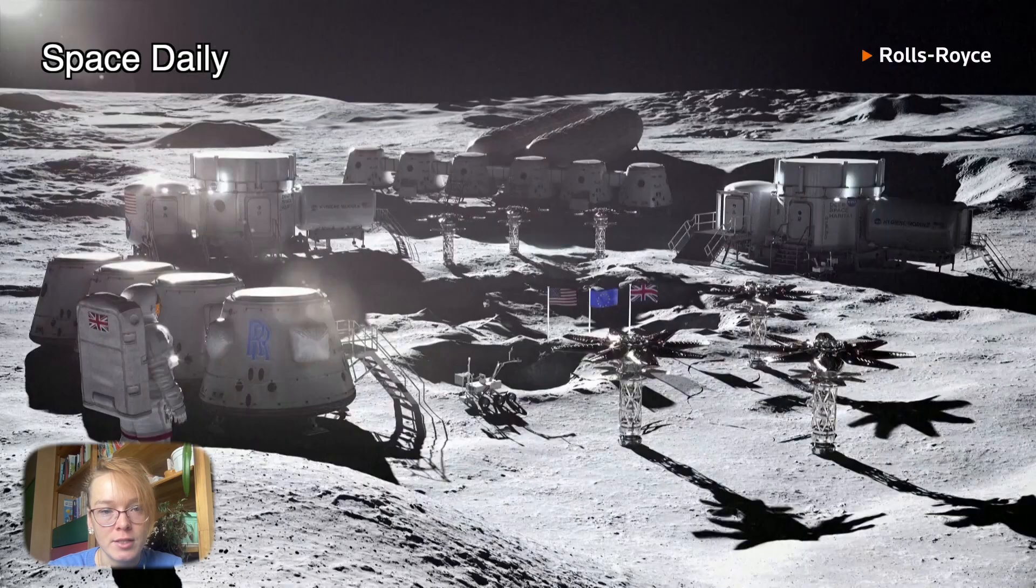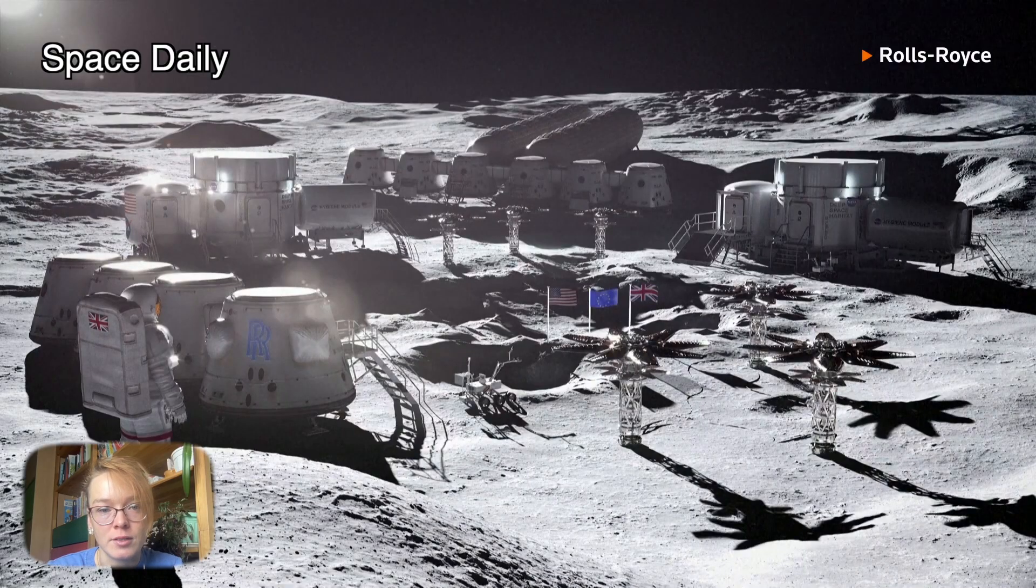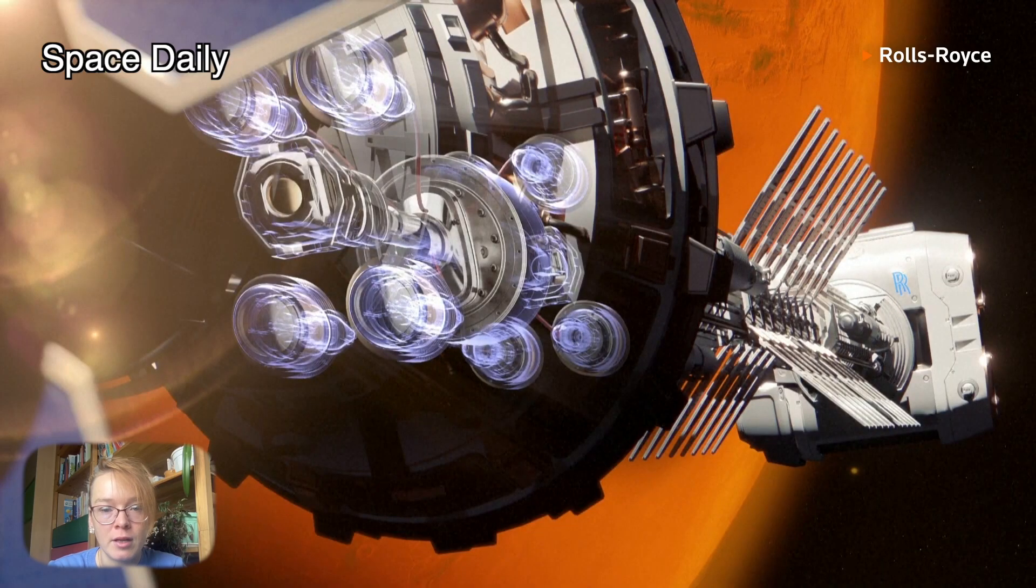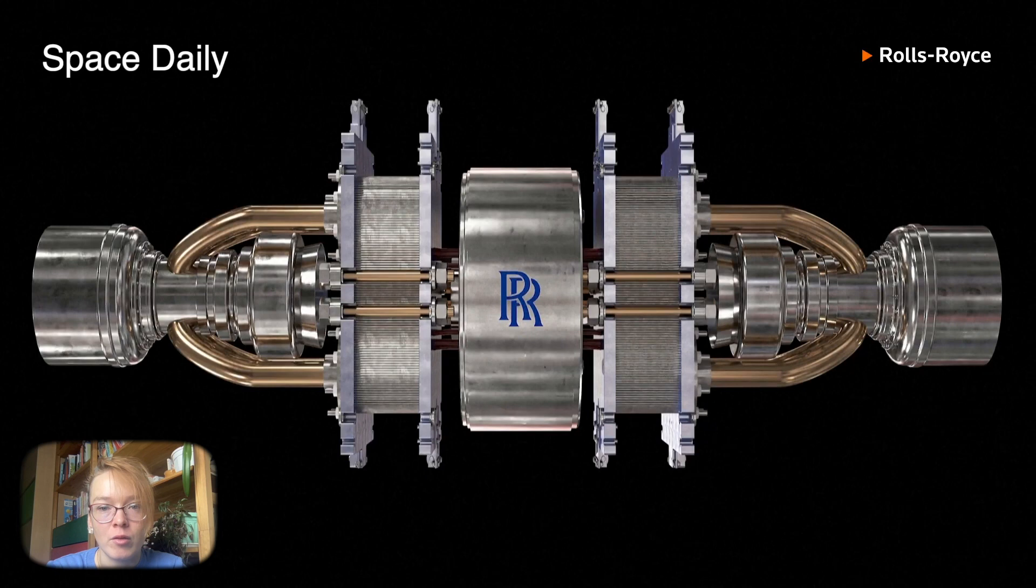It could be used as the main source of energy for rockets, orbital stations, and bases on the surface of the Moon and Mars. It is known to be a miniature nuclear power plant using uranium as the nuclear fuel.